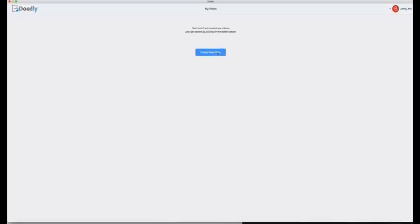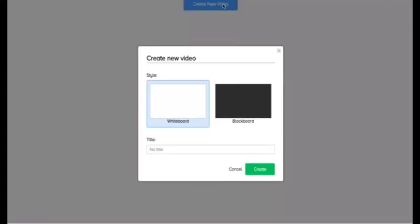Okay, so let's go ahead and create a new video and I'll show you the power of Doodly. First, you pick between whiteboard or blackboard, you name your project, and hit create.